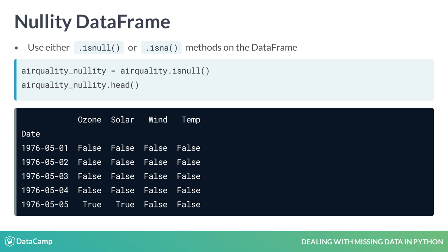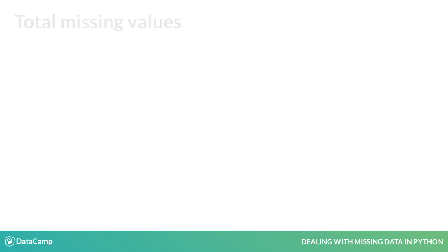We have stored this dataframe as air_quality_nullity. This dataframe can be called the nullity dataframe or dummy dataframe, but let's just stick to nullity dataframe.